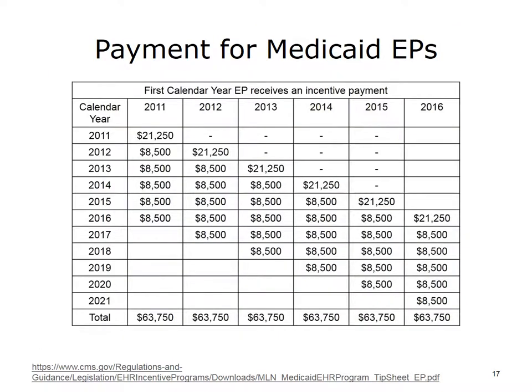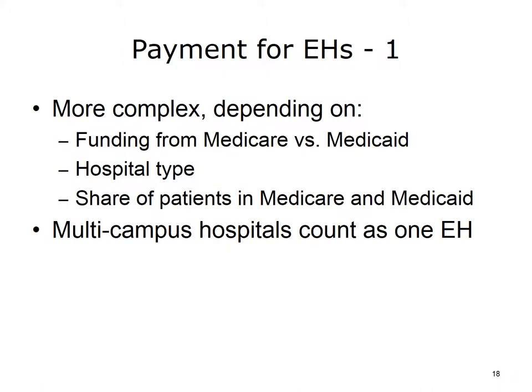The payment of eligible professionals under Medicaid is different. These individuals receive a much larger amount — $21,250 in the first year and then $8,500 for up to five years after that, and they get the full amount even if they qualify as late as 2016. The payment for eligible hospitals is a little more complex and depends on whether the funding comes through Medicare or Medicaid, the hospital type, and the share of patients in Medicare or Medicaid. One controversial aspect was that multi-campus hospitals were counted as if they were a single hospital.